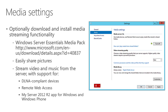In general settings, you can also set up media settings. Media support is now an optional download — disassociated from the OS itself to support the fact that the Essentials Experience is available as a role in Standard and Data Center editions. You can download media support if you need it to share pictures, stream video and music from the server. This is supported by Remote Web Access, the My Server app for Windows and Windows Phone, and DLNA-compliant devices.